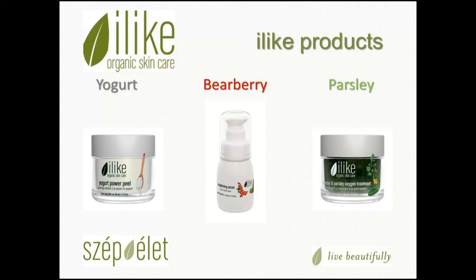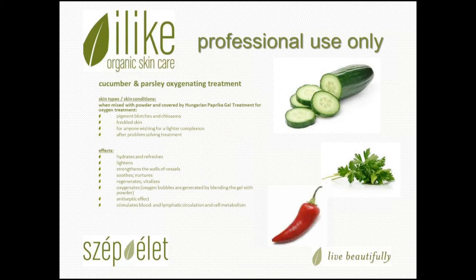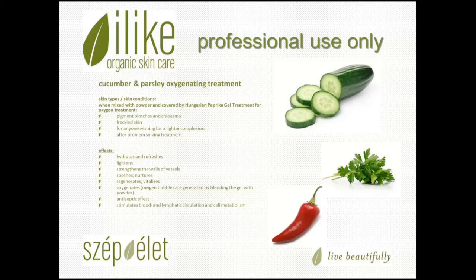The Cucumber and Parsley Oxygen Treatment is another treatment incredibly important to use for hyperpigmentation and for helping to heal the skin. This treatment comes in one product but in two separate containers — a gel mask and a powder. The powder activates the oxygenation in the gel mask when you want to do that oxygenating treatment. Ideally, mix two parts gel to one part powder, and once you begin to stir them, you'll notice a little bit of bubbling — that's the oxygenation.